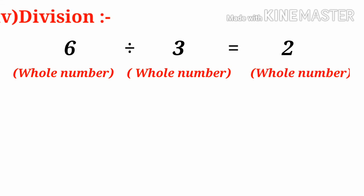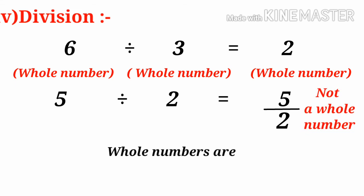Now, Division. Take 6 divided by 3 equals 2, where 6 is a Whole Number, 3 is a Whole Number, and the result is also a Whole Number. But when we divide 5 by 2, we get 5 by 2, which is not a Whole Number.